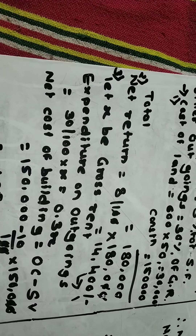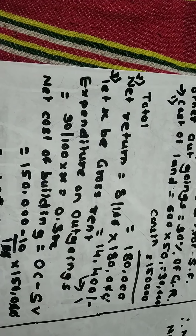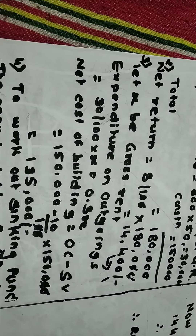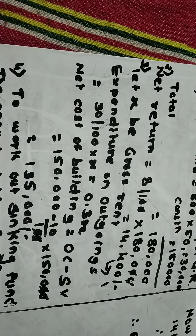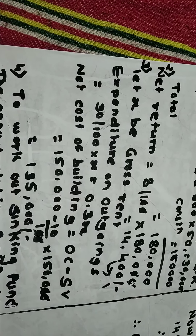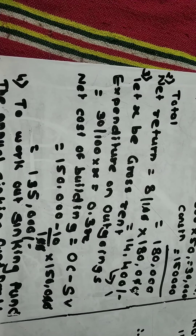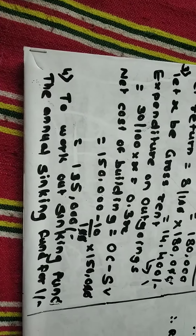Let x be the gross rent. The expenditure on outgoings is 30 percent of gross rent, which equals 0.3x. The net cost of the building equals original cost minus scrap value, that is, construction cost rupees 1 lakh 50,000 minus 10 percent of 1 lakh 50,000, which gives rupees 1 lakh 50,000 minus rupees 15,000, equaling rupees 1 lakh 35,000.